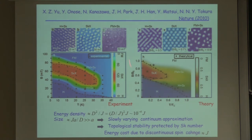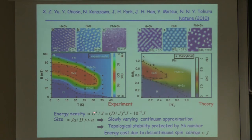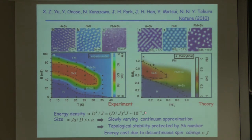Here is our Monte Carlo simulation, and this is an experimental observation. There are two energy scales. One is the transition temperature T, which is typically the exchange coupling J. The other is the magnetic energy, which controls the phase diagram, given by D-squared over J. Because we have a length scale J over D, this wave number squared times J is the typical energy for skyrmion formation — the energy gain density for spins.